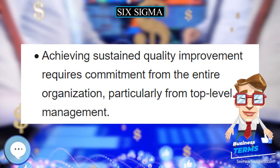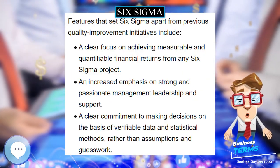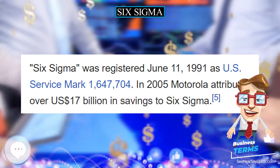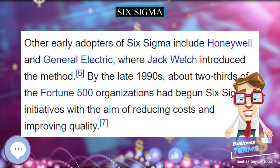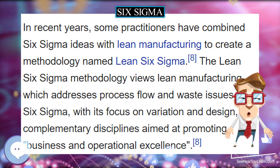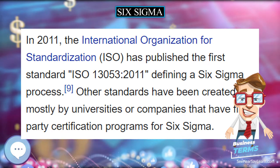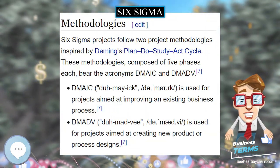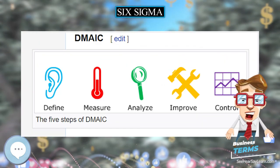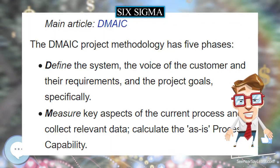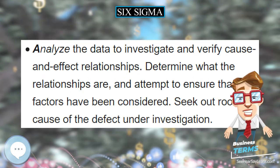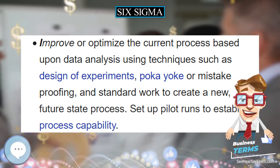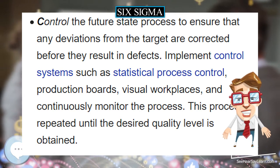Six Sigma mostly finds application in large organizations. An important factor in its spread was GE's 1998 announcement of $350 million in savings thanks to 6 Sigma, a figure that later grew to more than $1 billion. According to industry consultants, companies with fewer than 500 employees are less suited to 6 Sigma implementation or need to adapt the standard approach. However, 6 Sigma contains a large number of tools and techniques that work well in small to mid-size organizations, and the infrastructure described as necessary is a result of the size of the organization rather than a requirement of 6 Sigma itself.